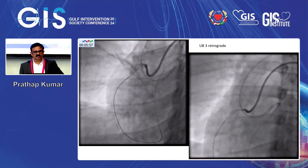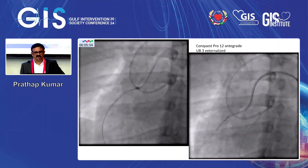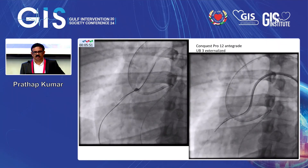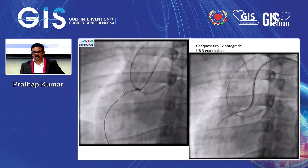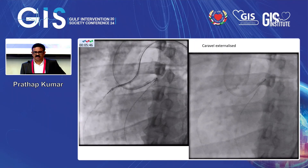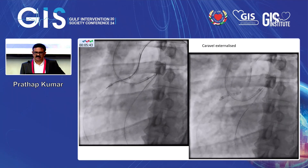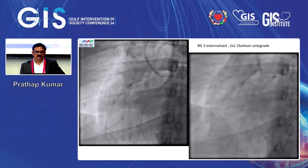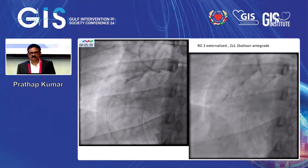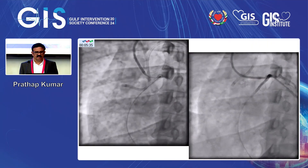UB3 retrograde — finally we went into the vessel. Once externalized: UB3 externalized, Congresspro 12 anti-grade, Caraville externalized. Till this part was easy. RG3 externalized, 2x12mm balloon. So the procedure was looking very simple now.